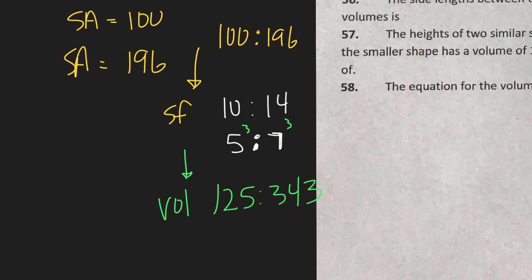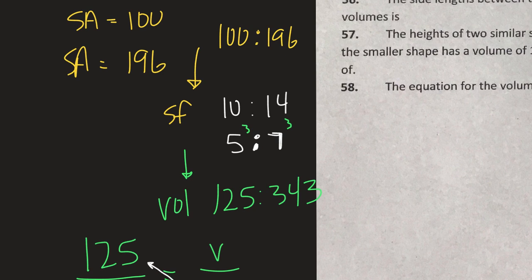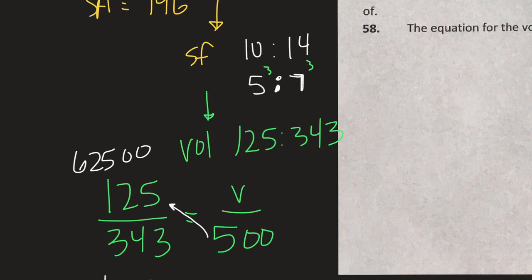So 5 cubed to 7 cubed is 125 to 343. Now we have your ratio and can set up our proportion. A proportion is a fraction equals a fraction — 125 over 343 equals volume over 500, where 500 is the volume of the big brother. We solve by cross-multiplying: 125 times 500 is 62,500, divided by 343. I get a volume of 182.216 — probably cubic centimeters.